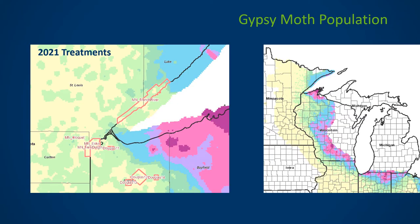Here are two more images depicting where Gypsy Moth populations are occurring. If you look at these, think of radar that you might be tracking for a thunderstorm — the heavier and brighter, the higher the Gypsy Moth population is as it slowly moves across the country. You can see places in 2021 where treatments occurred to slow the spread and or eradicate Gypsy Moth on this leading edge.